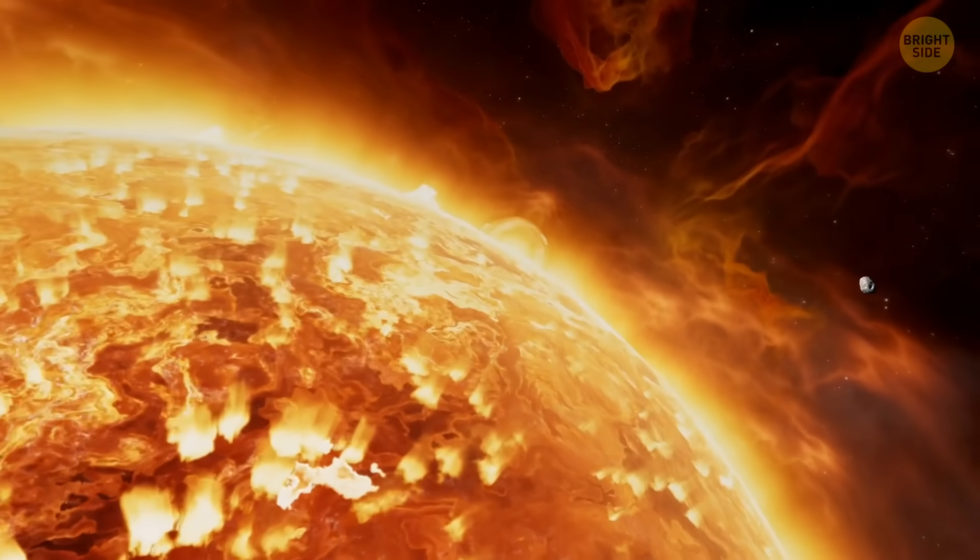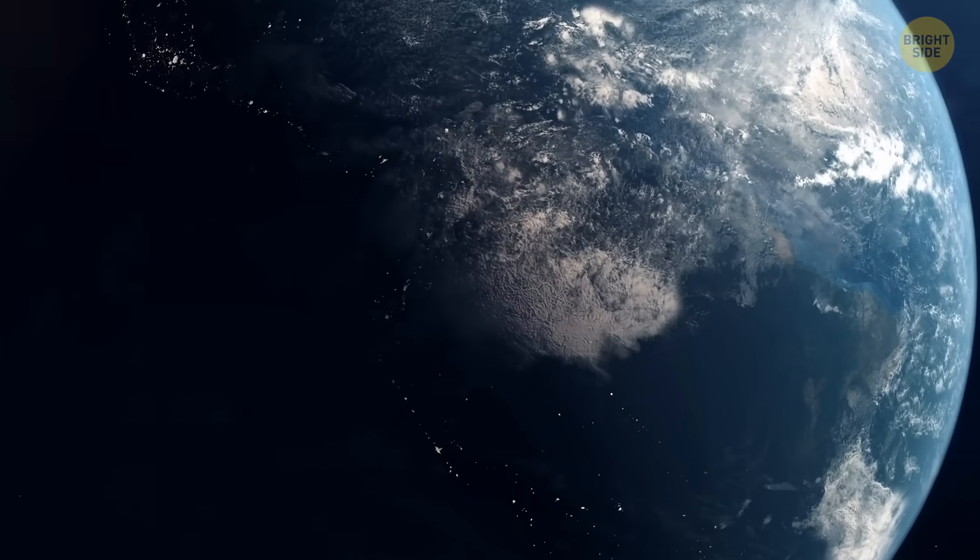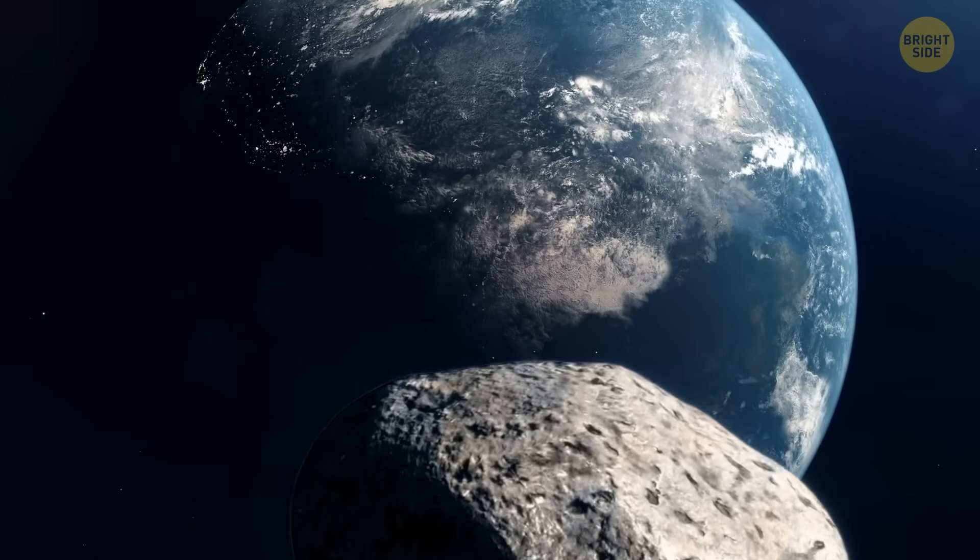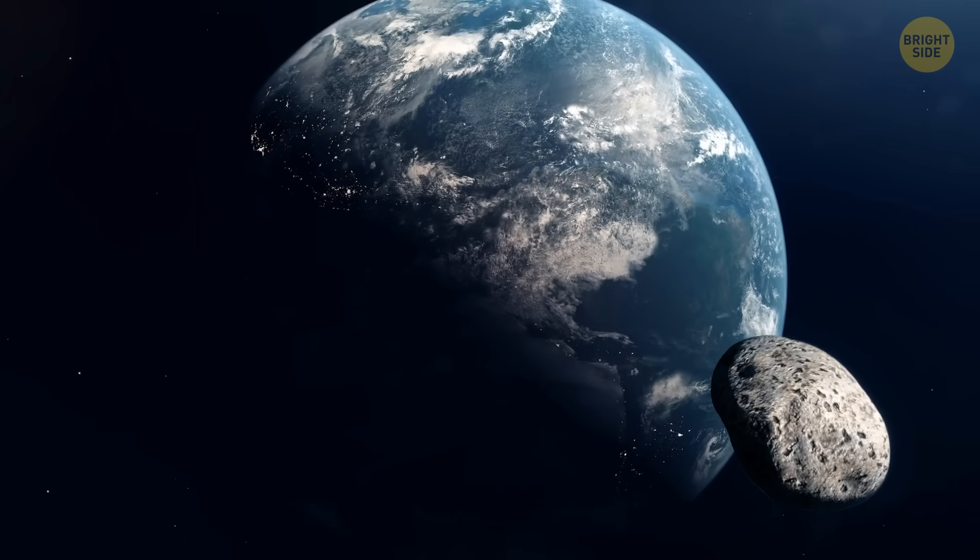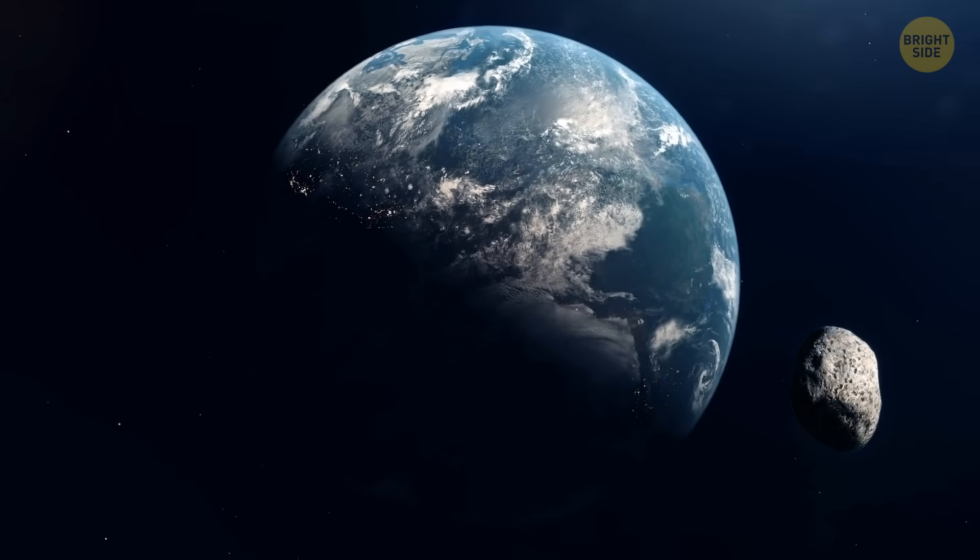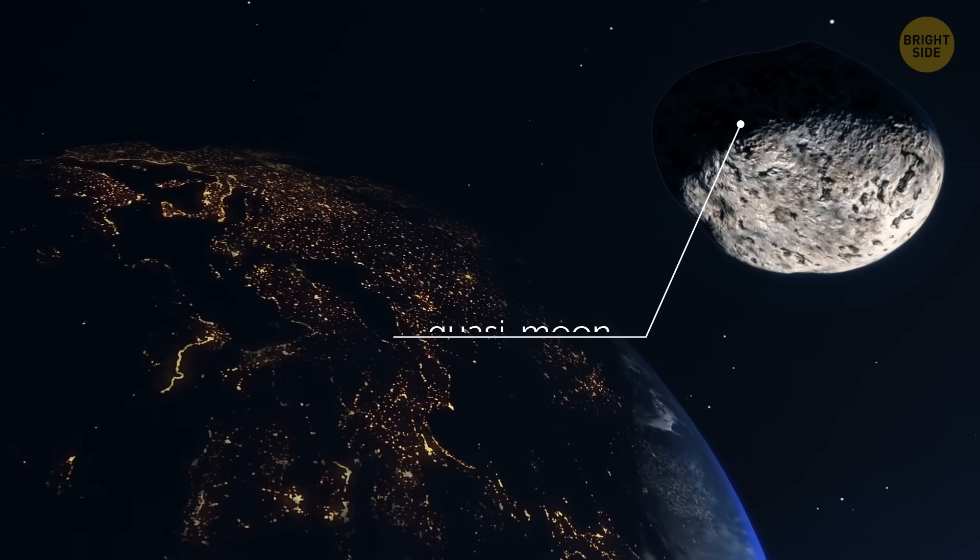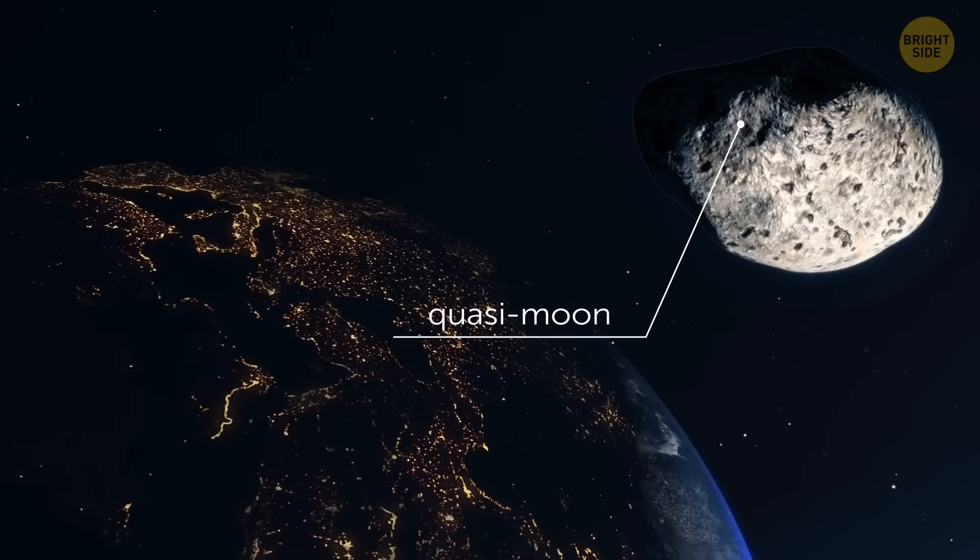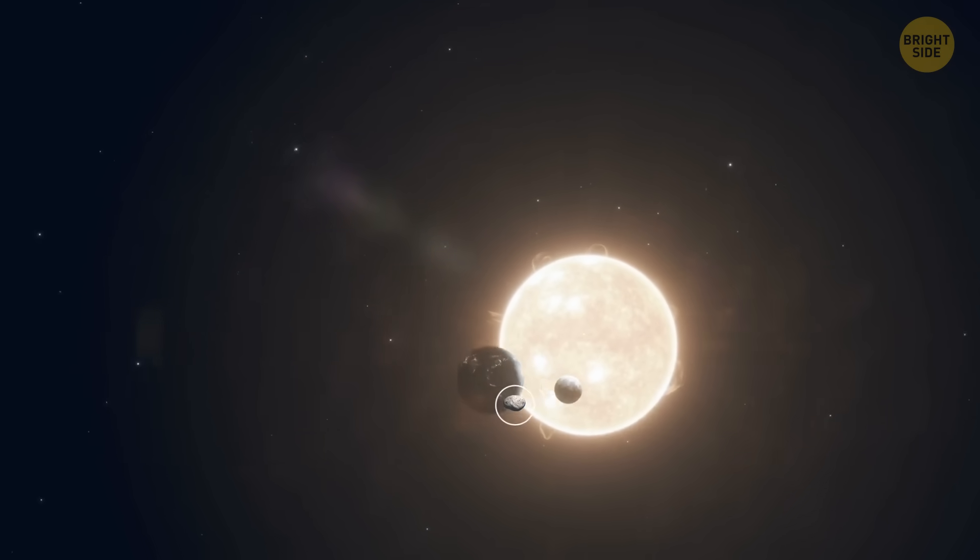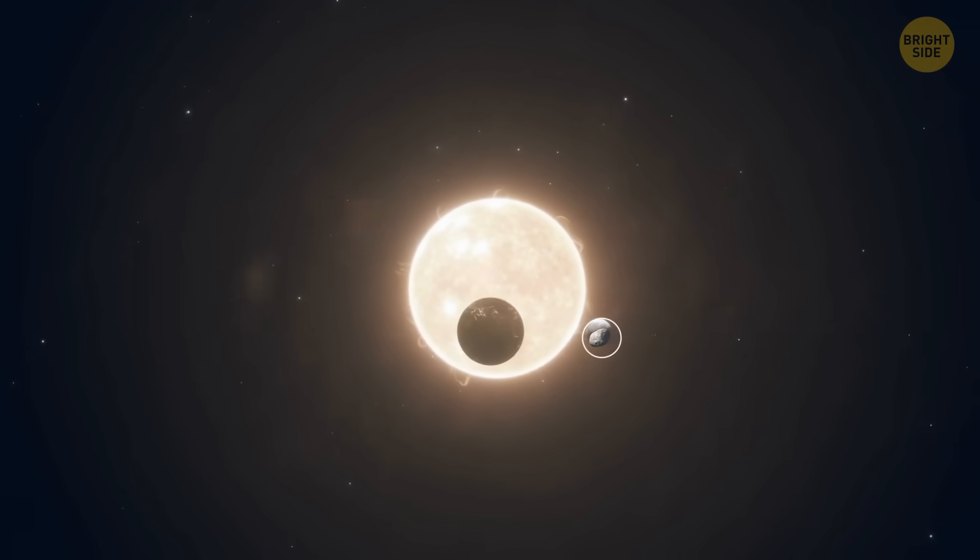However, astronomers now say another rock has been tagging along with Earth not for weeks, but for six decades. It's rare and strange, now being classified as a quasi-moon. But what exactly does that mean? Is it like a backup satellite?